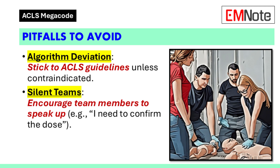Pitfalls to avoid: Avoid deviating from ACLS algorithms unless contraindicated. Encourage team members to speak up if they notice potential errors — for example, a team member might say 'I need to confirm the dose.' Address these concerns promptly to maintain accuracy.